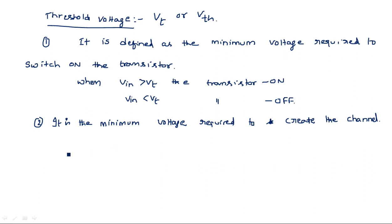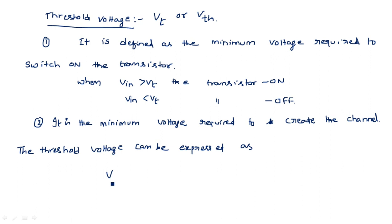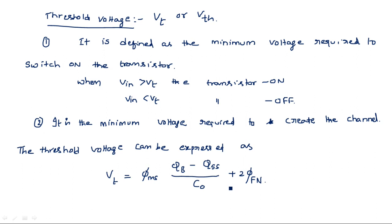The threshold voltage Vt can be expressed as: Vt = φms − (Qb − Qss) / C0 + 2φFn. Here, φms is the work function difference between the gate and silicon, Qb is the charge per unit area in the depletion layer, Qss is the charge density at the silicon–silicon dioxide interface, C0 is the gate capacitance per unit area, and φFn is the Fermi potential.